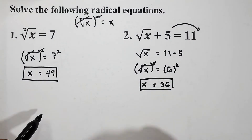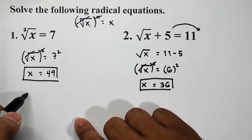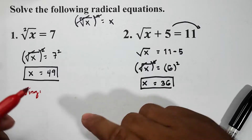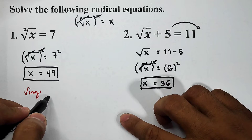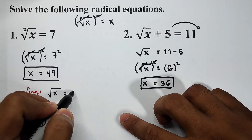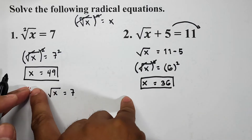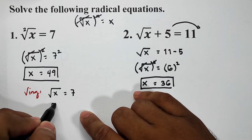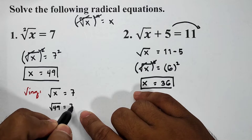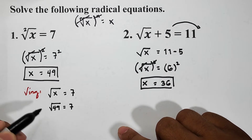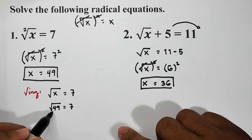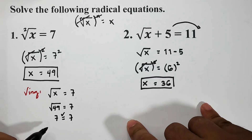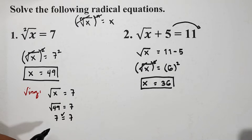By the way, if you want to check whether your answer is correct, we can do checking. Let's check number one. In number one we have the square root of x is equal to seven and the value of x is 49. So we replace x with 49: square root of 49 is equal to seven. We know that the square root of 49 is seven, so they are equal — meaning the answer is correct.